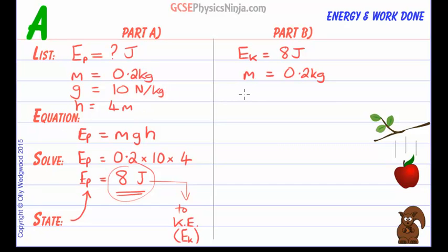We know the gravitational field strength, we know the height, but in this case all that we're really interested in is the maximum speed, V, velocity. So we're going to put that as the question mark and that will come out in meters per second.